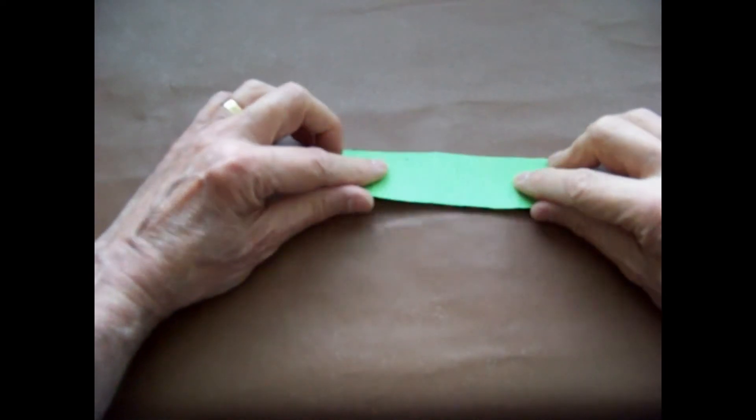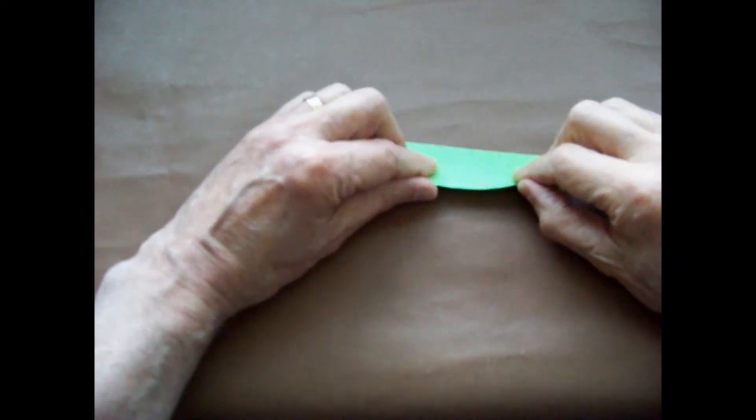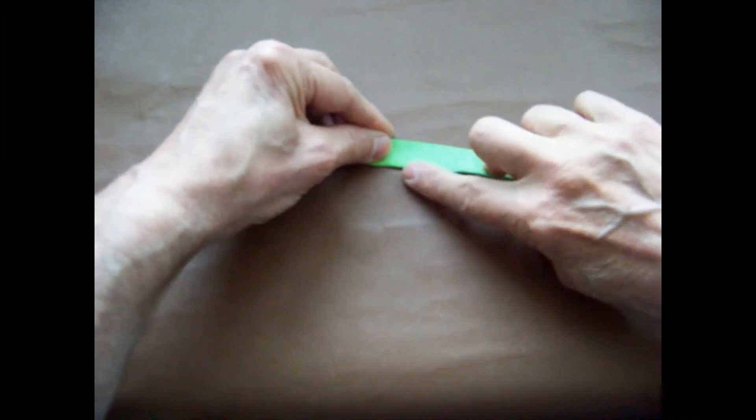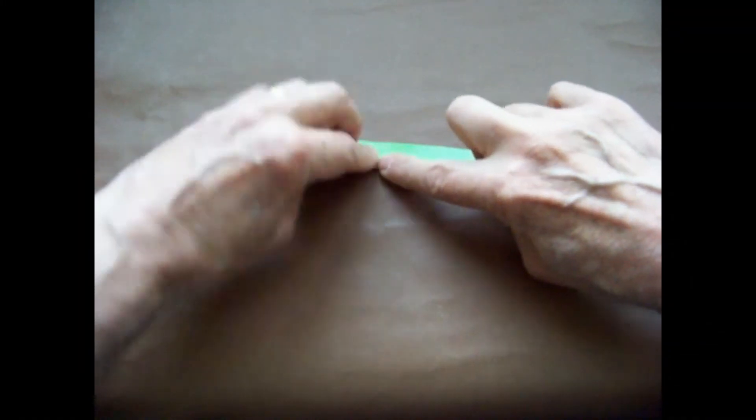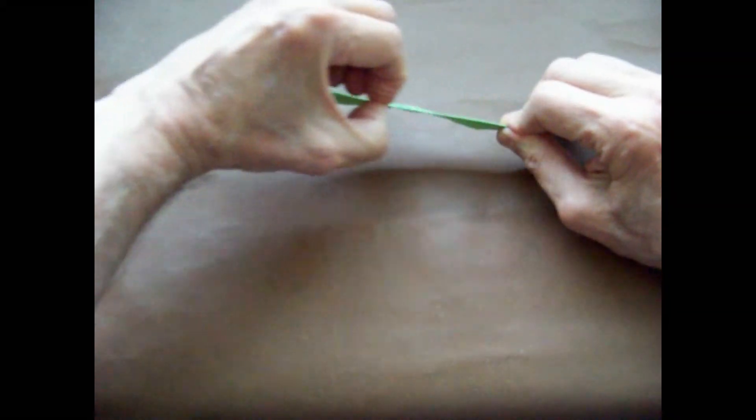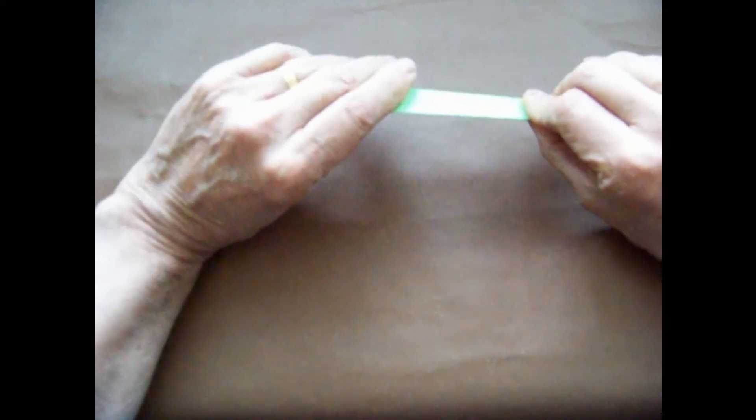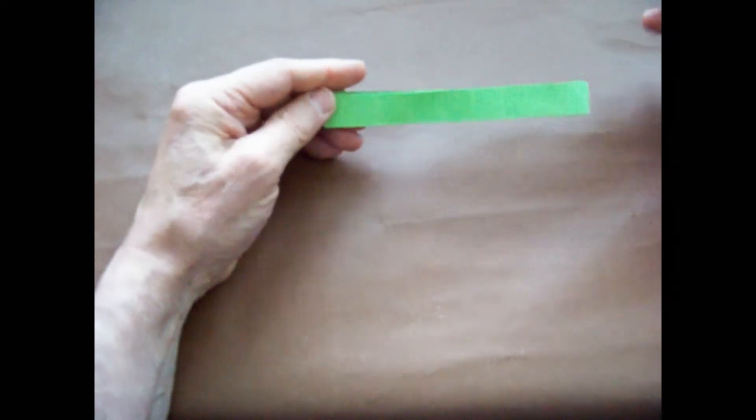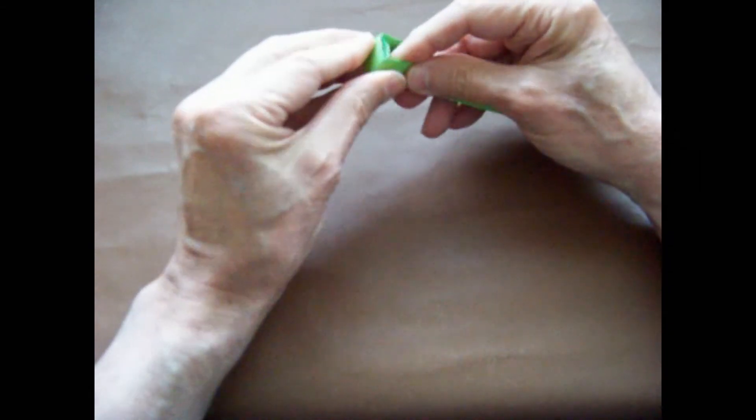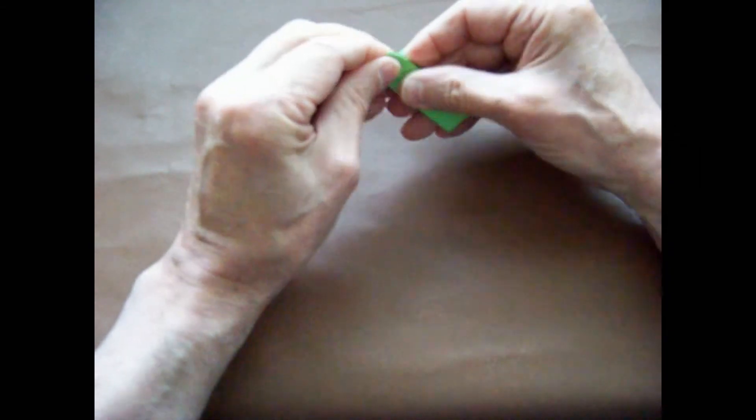Next, we fold the rectangle in half lengthwise, creasing sharply. We want to refold the previous creases across the entire model, always going in the same direction.